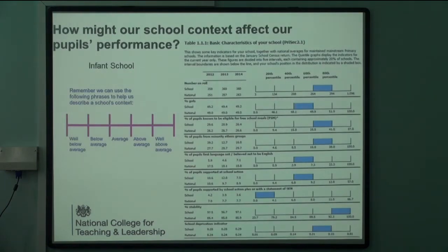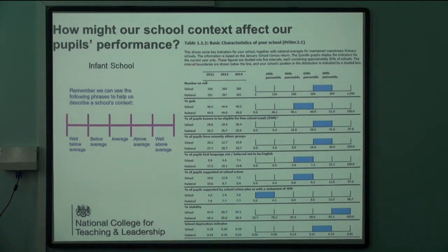The first thing to think about is the school's context. As I go through this, each slide will either be the infant school or the junior school and I'll let you know where they are. I've tried to put the same bits together — we're going to look at each bit in turn. The first question for us to ask is: how might our context affect our pupils' performance?